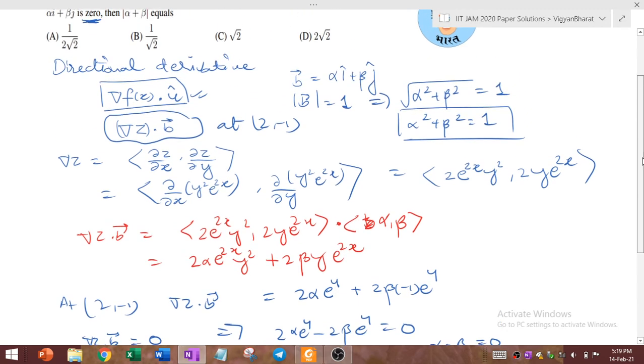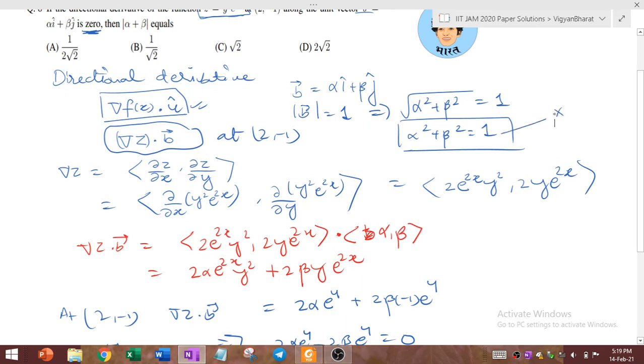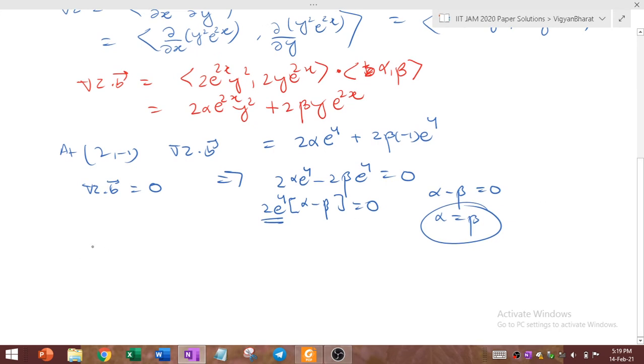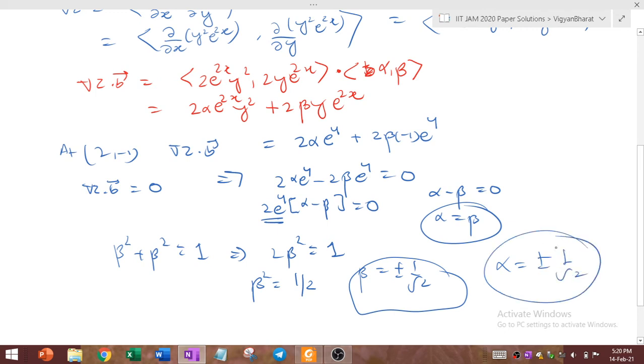Alpha is same as beta. We have to use this constraint now. From here if we replace alpha by beta then we get beta square plus beta square is 1 which implies simply beta square equals to half and beta equals to plus minus 1 by root 2.